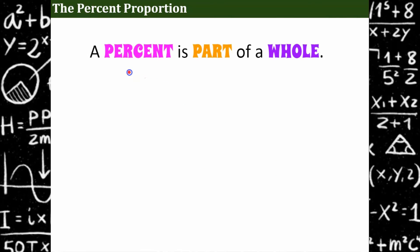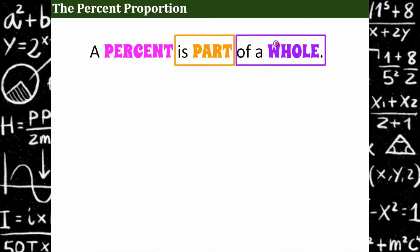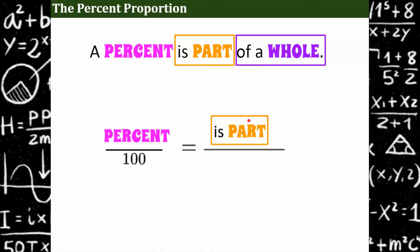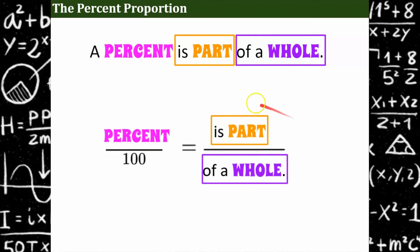Using the percent proportion, you're going to see statements like: a percent is part of a whole. That's a statement you want to become familiar with. The keyword 'is' identifies your part, and the keyword 'of' identifies your whole, because we say that something is a part of a whole. So we have a percent over 100 equal to the part over the whole. If you can embrace this idea that a fraction is a ratio and something is a part of a whole equivalent to a percent over 100, you're all set.